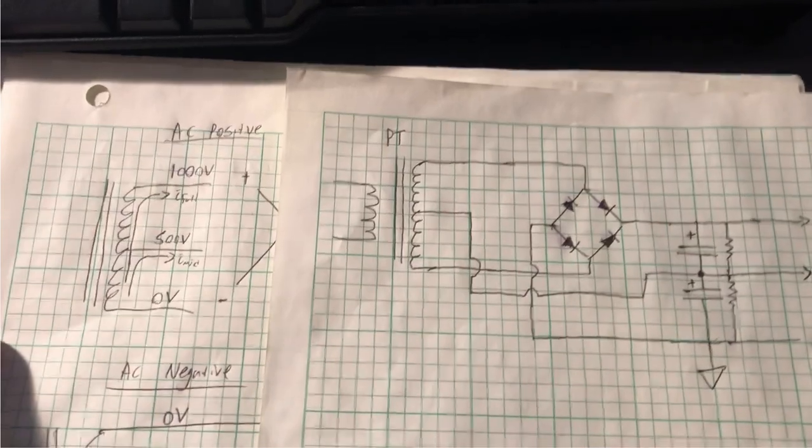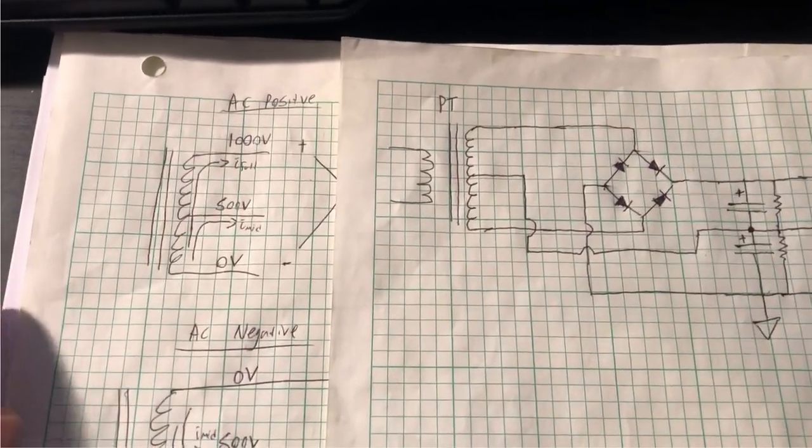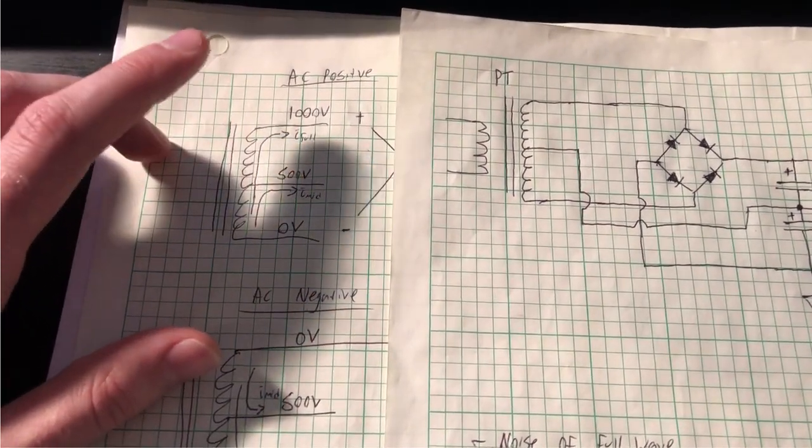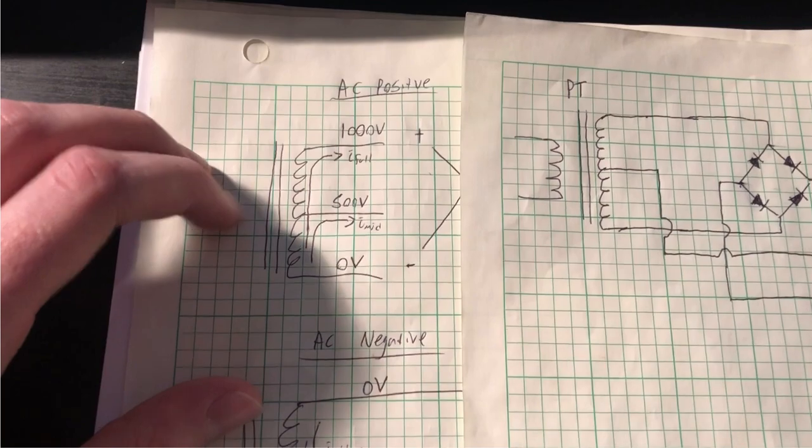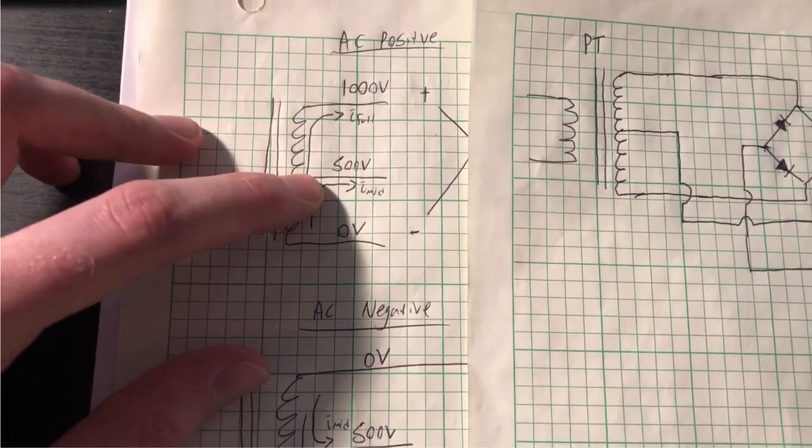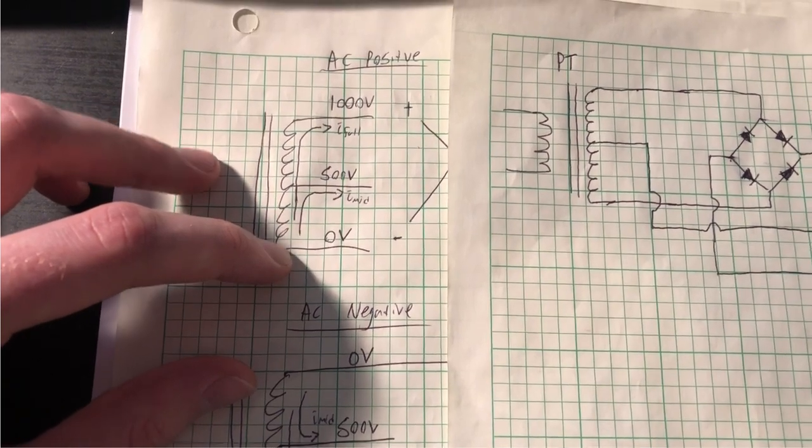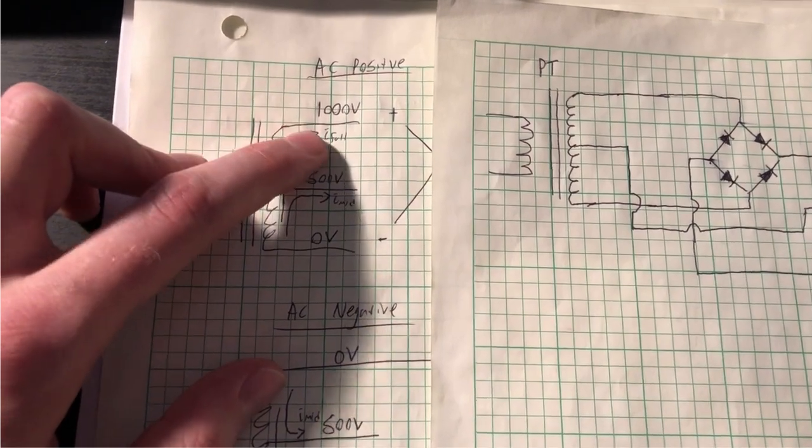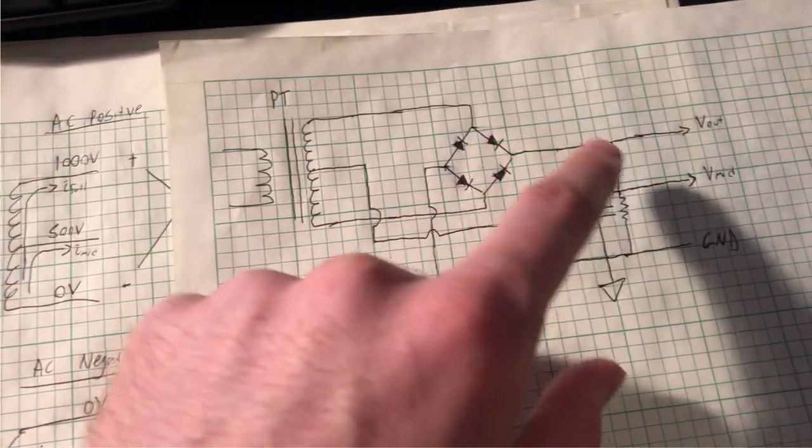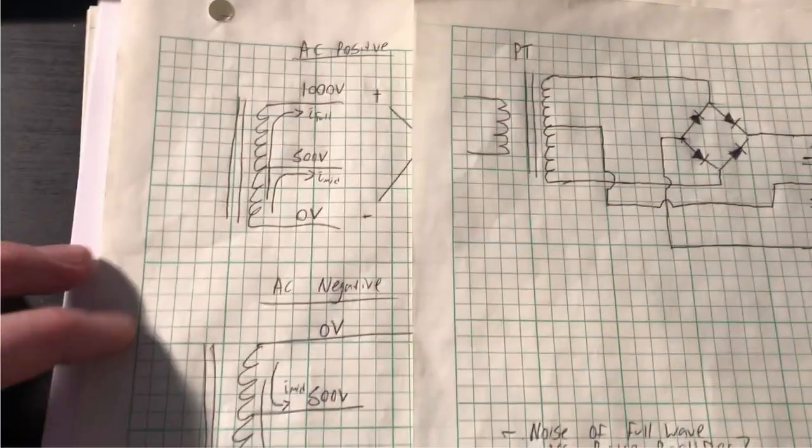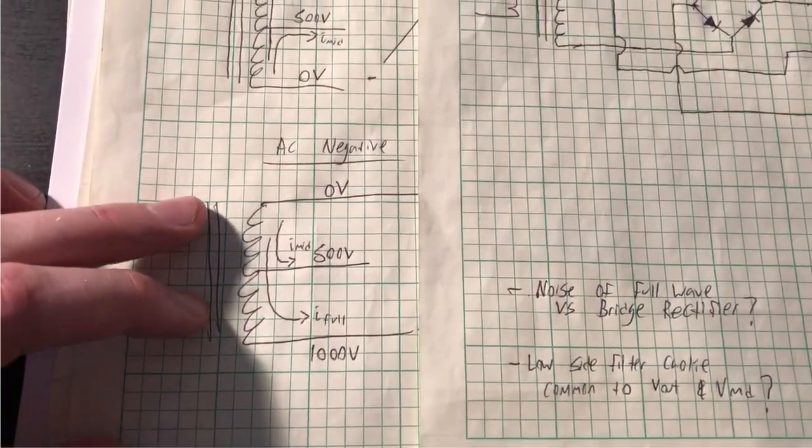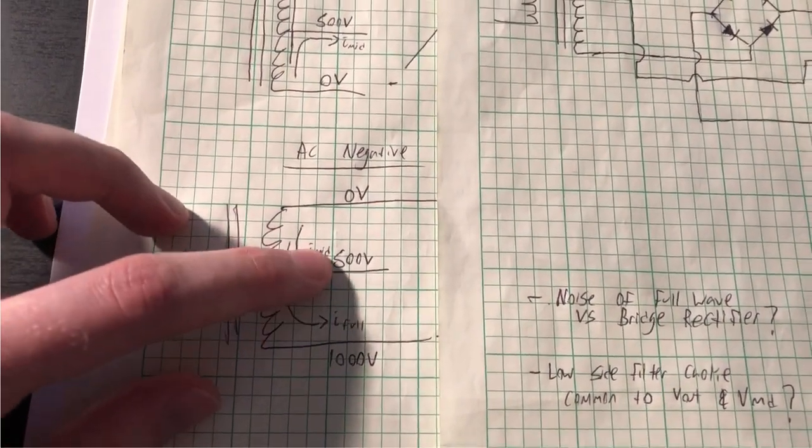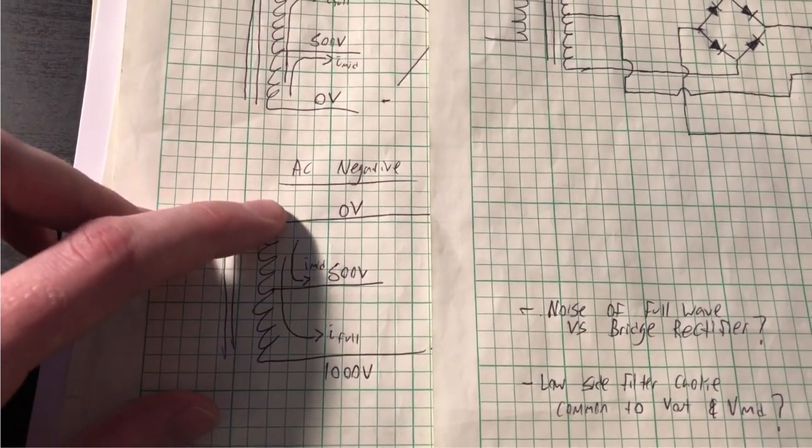How this works is the center tap obviously is sitting at the mid of the transformer, so if we've got a thousand volt winding, when the top side of the transformer is at a thousand volts, we get 500 volts at our center tap and zero here. And through the rectifier arrangement, this current is pushed into the mid rail, this current is obviously pushed into the high side under the top of the cap here. And likewise the same when the polarity, the AC swing goes negative, we've got a thousand volts again across the transformer, this is still sitting at 500 volts relative to this opposite side.